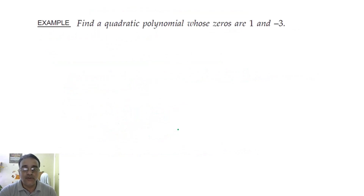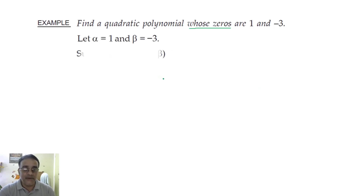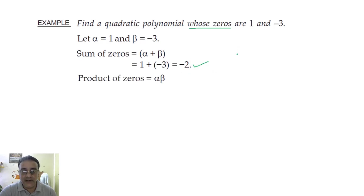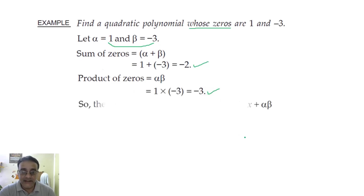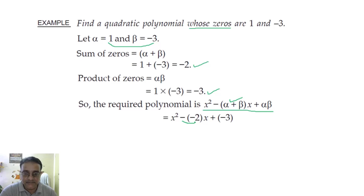Now here zeros are given — this is another type of question compared to the previous one where sum and product were given. Let α = 1 and β = −3. We find the sum: α + β = 1 + (−3) = −2. The product: α × β = −3. Writing the formula x² − (α + β)x + αβ and substituting: the minus-minus becomes plus, and plus-minus becomes minus, giving the final polynomial.